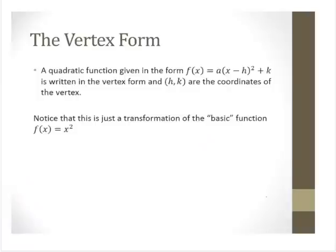There is also a vertex form. A quadratic function f(x) = a(x − h)² + k is written in vertex form, where (h, k) are the coordinates of the vertex. This is just a transformation of the basic function f(x) = x² — shifts left/right, up/down, flips, and scaling — all the transformation ideas from chapter 3 apply here.